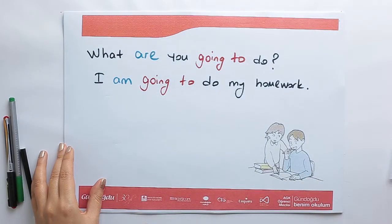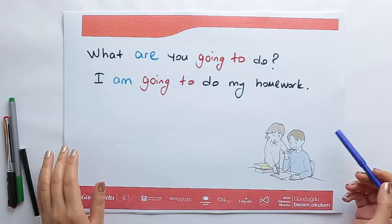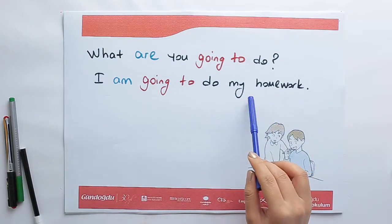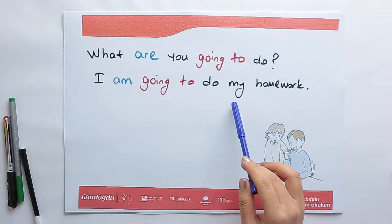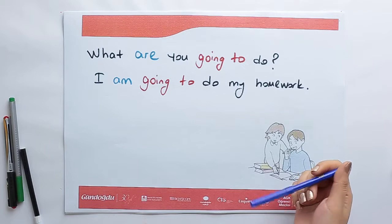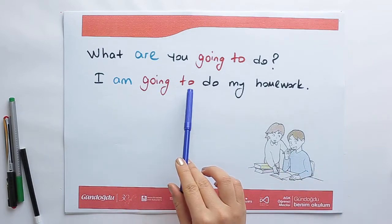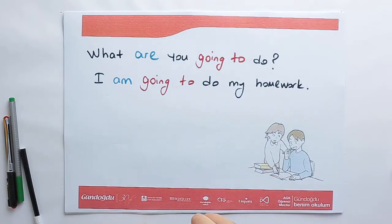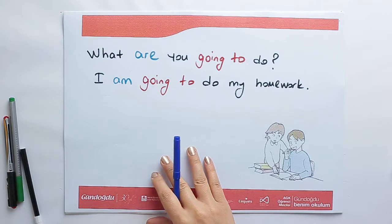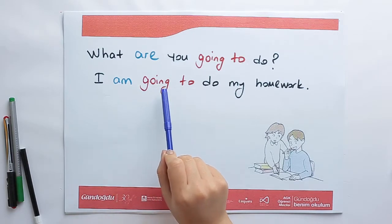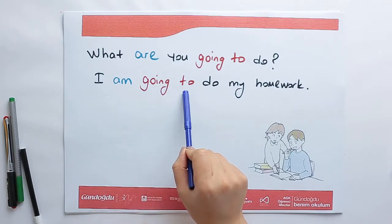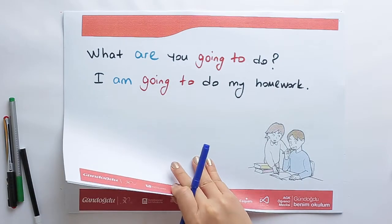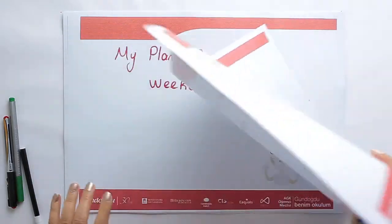What are you going to do? I am going to do my homework. Be going to and verb — our verb is 'do' in the sentence.